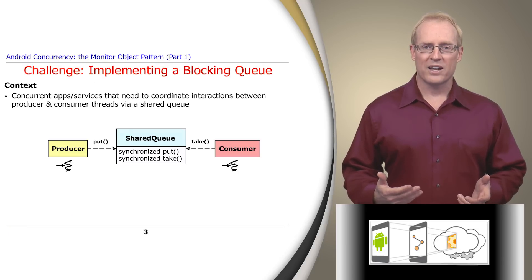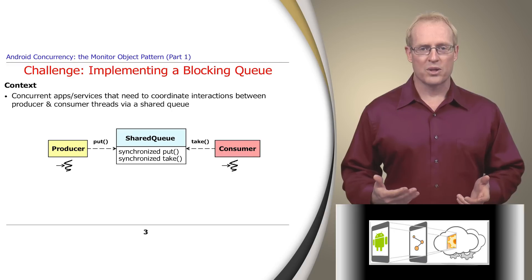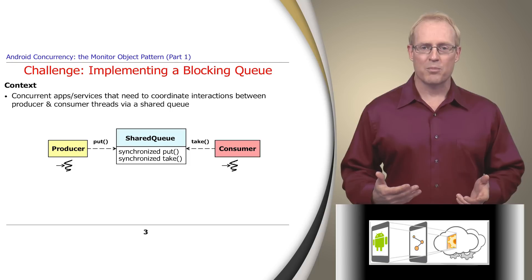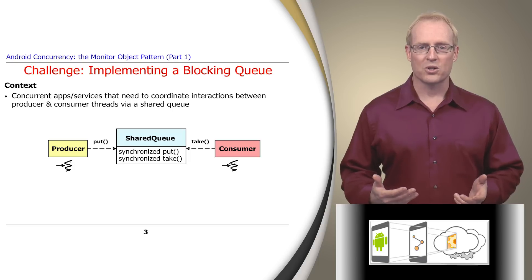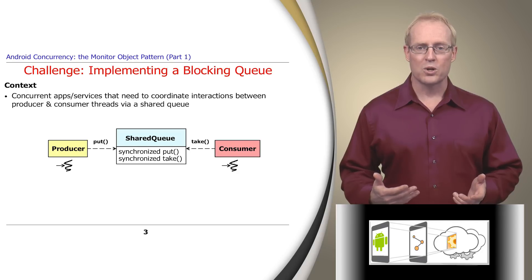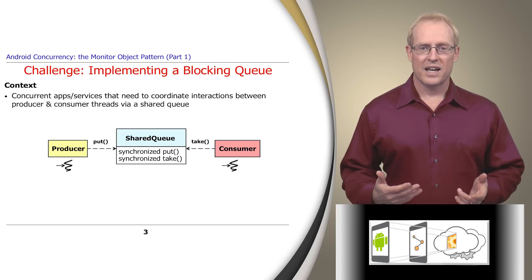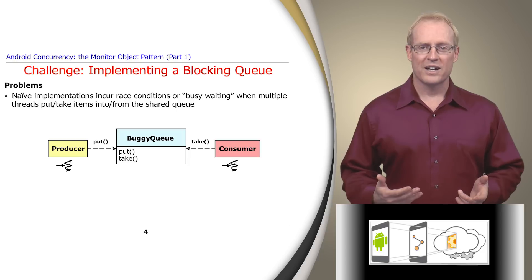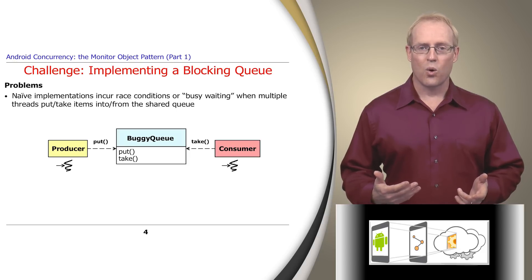To motivate the need for this pattern and to introduce an example that we'll use throughout our discussion, we generalize from several examples covered in previous parts of this module, where concurrent applications and services need to coordinate the interactions of multiple producer and consumer threads via a shared queue. A common problem in this type of software is that naive implementations of a shared queue will incur race conditions or busy waiting when multiple threads put and take items into and from the queue.